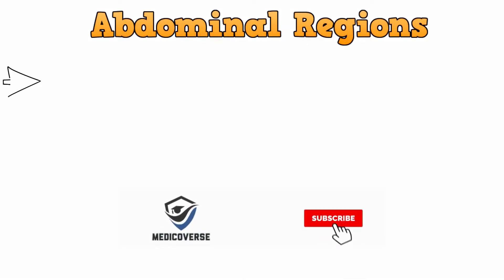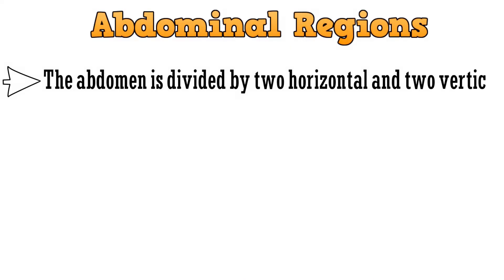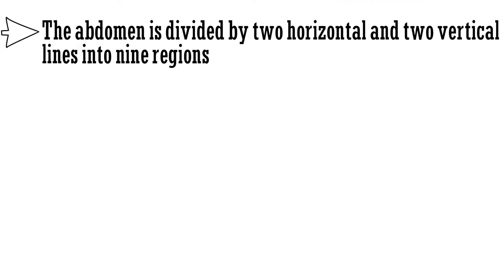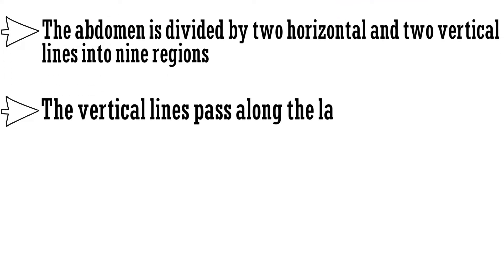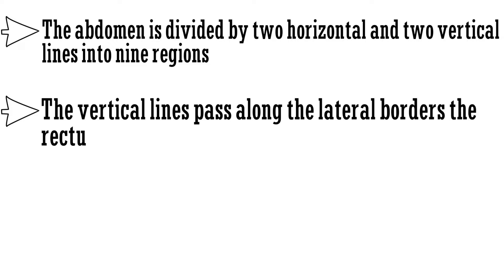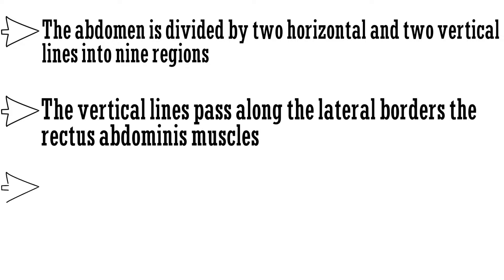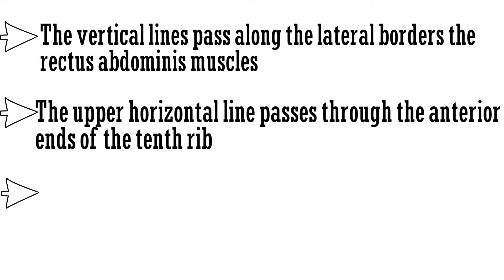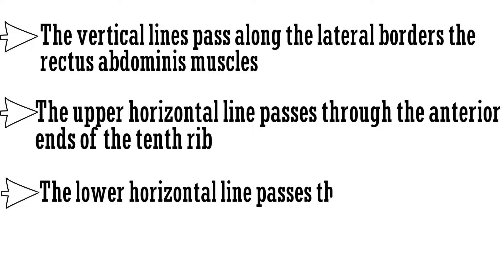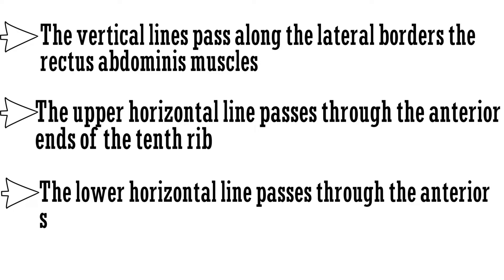Talking about the abdominal regions, the abdomen is divided by two horizontal and two vertical lines into nine regions. The vertical lines pass along the lateral borders of the rectus abdominis muscles. The upper horizontal line passes through the anterior ends of the 10th rib. The lower horizontal line passes through the anterior superior iliac spine.